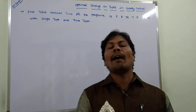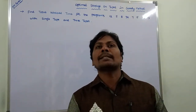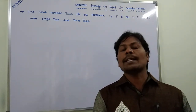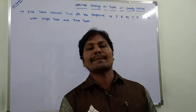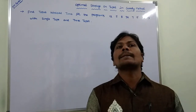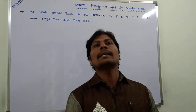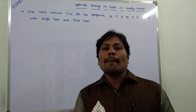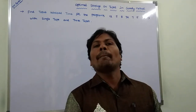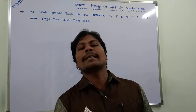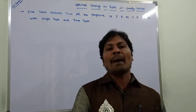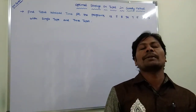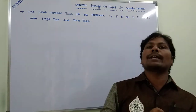Greedy method is one of the algorithm design methods. This method is used for solving optimization problems. An optimization problem may require either a maximum result or a minimum result. If we require the maximum result, then this problem can be treated as a maximization problem. If the problem requires a minimum result, then this problem can be treated as a minimization problem. Now we go for one of the applications of greedy method: optimal storage on tapes.